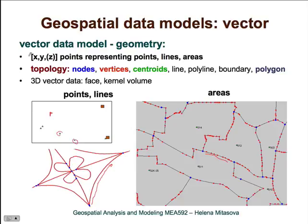The important distinction is that each point is represented by its x, y, z coordinates — two-dimensional or three-dimensional — while with raster data representation, coordinates were really needed just for the corners of the raster.